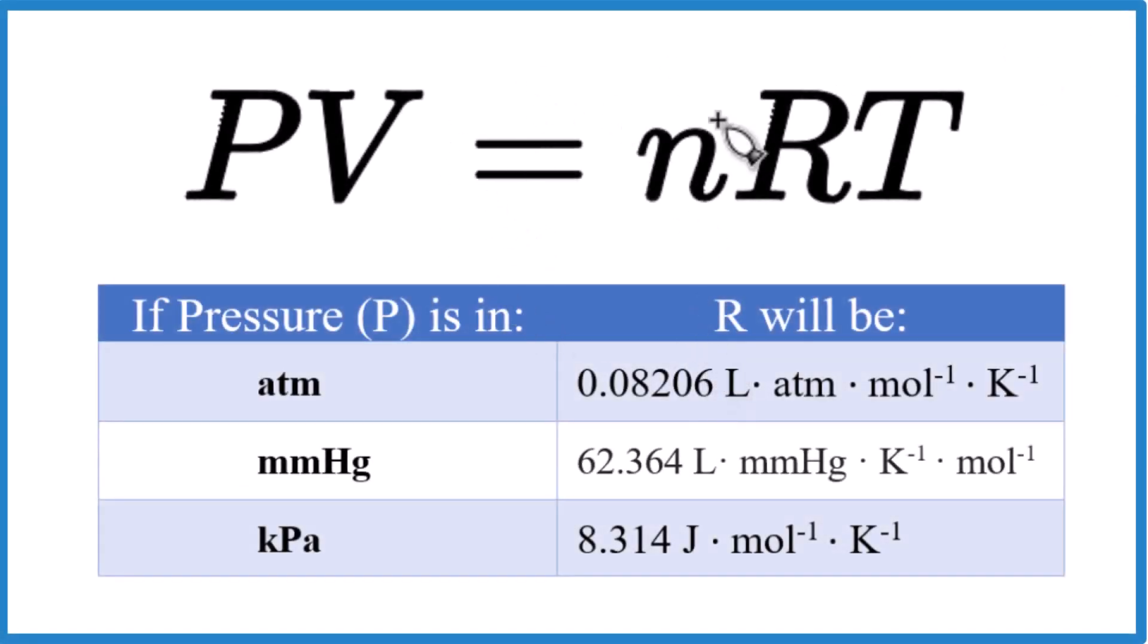So I was asked whether when we use the ideal gas law, PV equals nRT, do we have to use liters as our volume? And the answer is yes, and here's why.